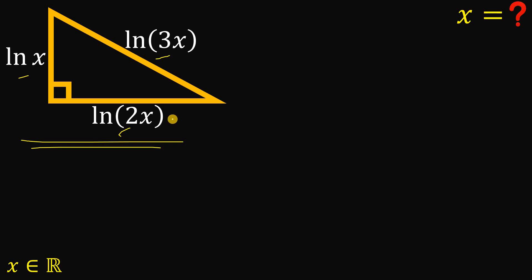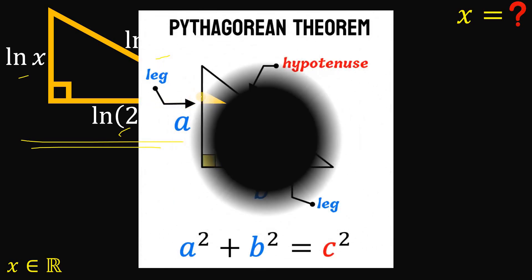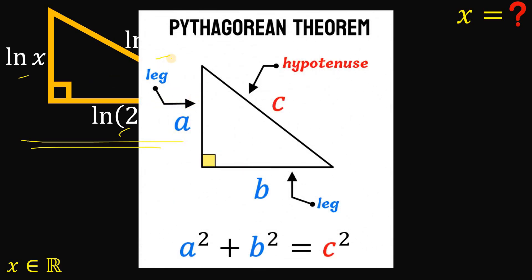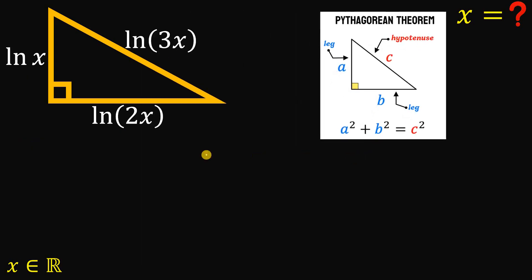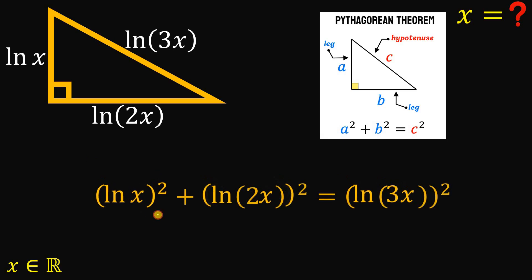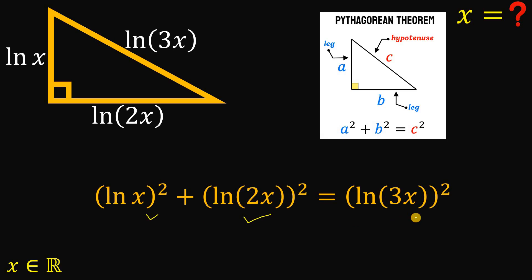To answer this kind of question, we will use the Pythagorean theorem, wherein we have a squared plus b squared equals c squared. So using the Pythagorean theorem in this right triangle, we can say that (ln x)² plus (ln 2x)² equals (ln 3x)².